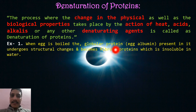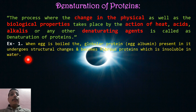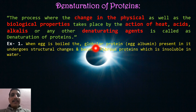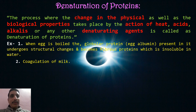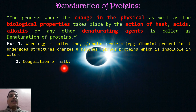When an egg is boiled, the globular protein egg albumin undergoes structural change and becomes fibrous protein. Globular protein is soluble in water whereas fibrous protein is insoluble in water — there is a change in physical property and it loses its biological property. So boiling of egg is an example of denaturation of protein. Another example is coagulation or curdling of milk.